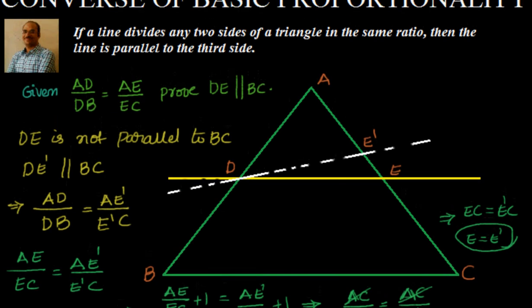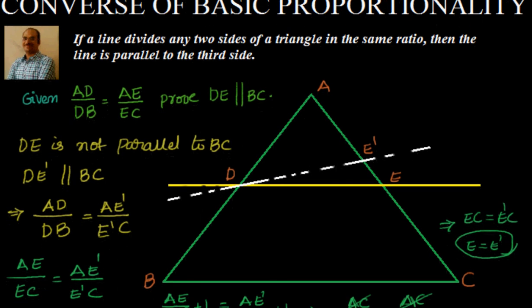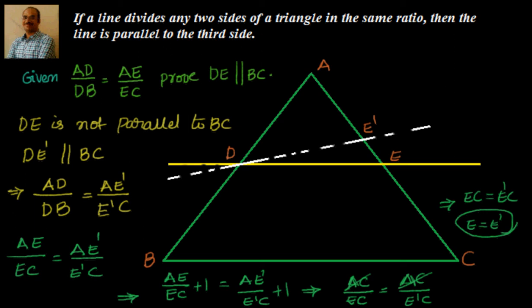That is about the converse of the basic proportionality theorem. With this, in the next video we will look at the similarity criteria — that is SSS criteria, AAA criteria, and SAS criteria. After that we will do some problems on similarity. Thanks for visiting. Bye for now. See you in the next video.